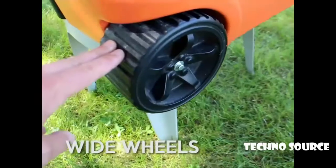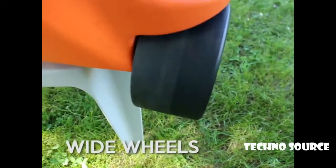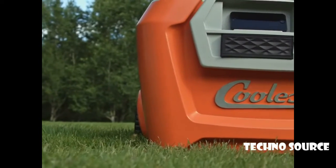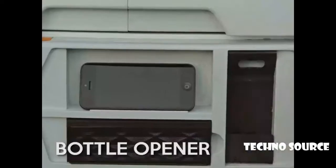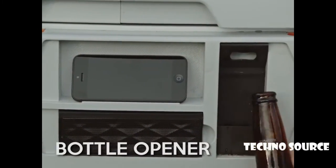Regular cooler tires are flimsy and sink right into the sand. We designed the Coolest wheels to be twice as wide to roll twice as easily. And how many hours of your life have you lost looking for a bottle opener? My grandpa's cooler had one, and so does the Coolest.